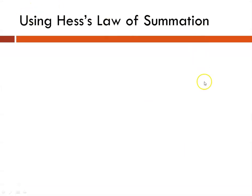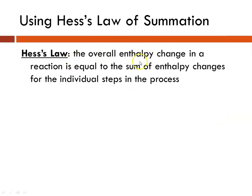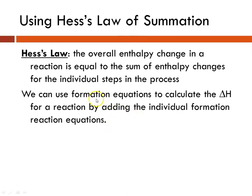When you use Hess's Law of Summation, you can use the equation where you take the sum of the delta H's of formation of the products minus the sum of the delta H's of formation of the reactants. You can also recall that the overall enthalpy change in a reaction is equal to the sum of all of the enthalpy changes in the individual steps in the process.